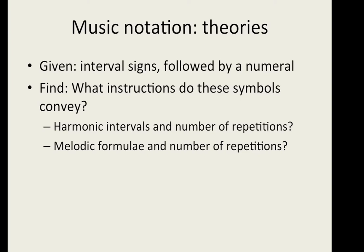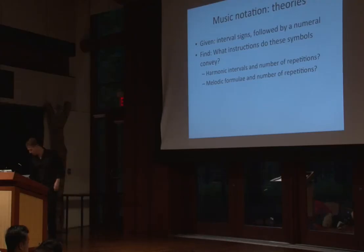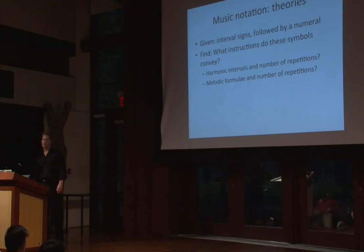Here's the information we find on the tablet, and it comes down to how it is interpreted. It appears we have interval signs — not 'play a fourth here,' but rather 'play the interval that means this string and this string specifically on the lyre.' Then there was a number after each sign. Scholars are trying to figure out what these symbols convey. Do they convey harmonic intervals and tell you how many times to do them? For example, if there's a symbol for an interval and then the number five after it, does that mean playing those two strings five times?